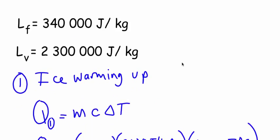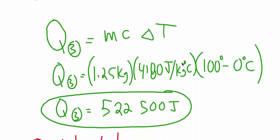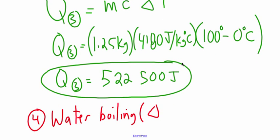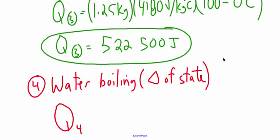Now on the chart, number four is where the water is boiling. So there's now a change of state. So for part four, water is boiling. Again, change of state. So we can't use MC delta T.